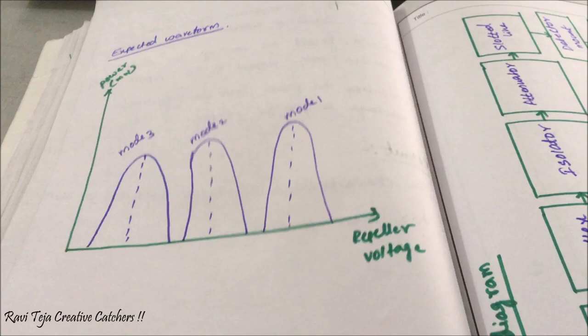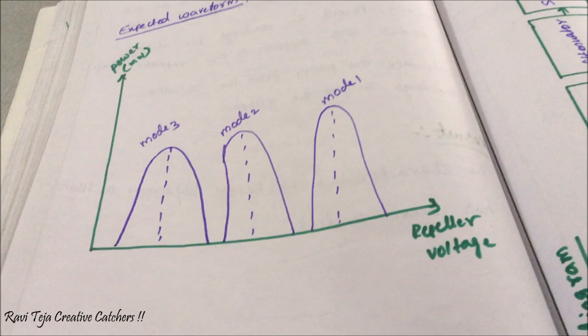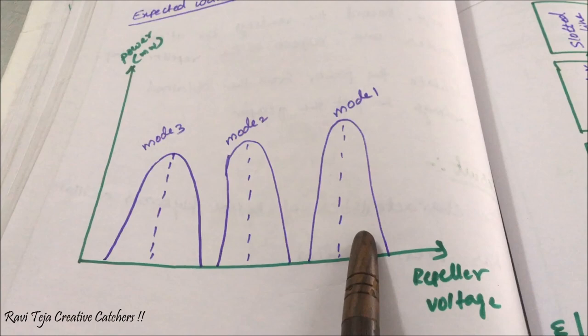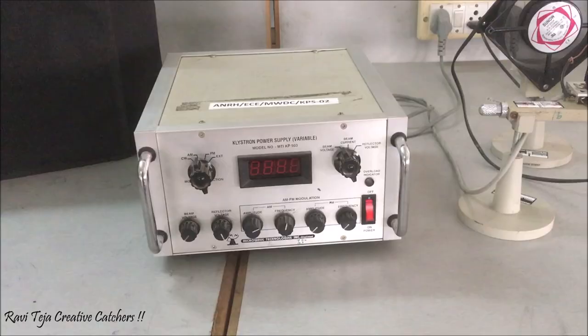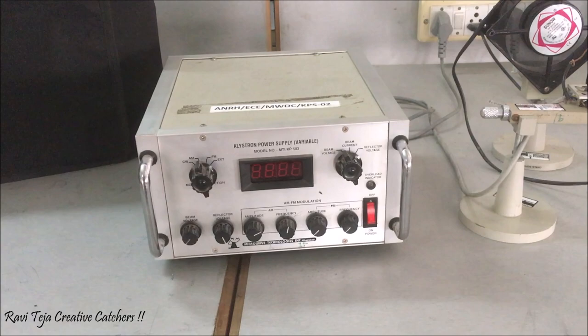After calculating the modes and the power with respect to the reflector voltage, we will get a waveform. For each mode we will get one wave. Whatever values we get, we draw the wave according to the reflector voltage and power. Now let us see the practical implementation of reflex klystron characteristics.